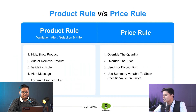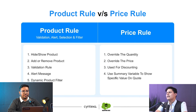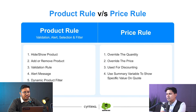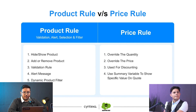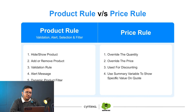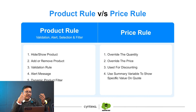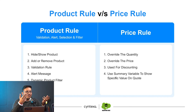So let's understand the difference between product rules and price rules. In the product rule, we have hide and show products — we can hide products that are incompatible and show products that are compatible with a selected item.